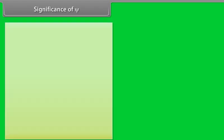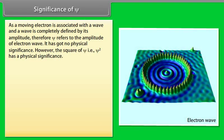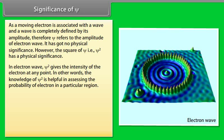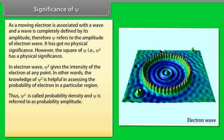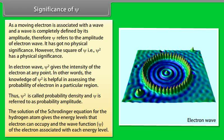Significance of Ψ: As a moving electron is associated with a wave, and a wave is completely defined by its amplitude, Ψ refers to the amplitude of the electron wave and has no direct physical significance. However, Ψ² has physical significance — in the electron wave, Ψ² gives the intensity of the electron at any point. The knowledge of Ψ² is helpful in assessing the probability of finding an electron in a particular region. Thus, Ψ² is called probability density and Ψ is referred to as the probability amplitude. The solution of the Schrödinger equation for the hydrogen atom gives the energy levels that the electron can occupy and the wave function associated with each energy level.